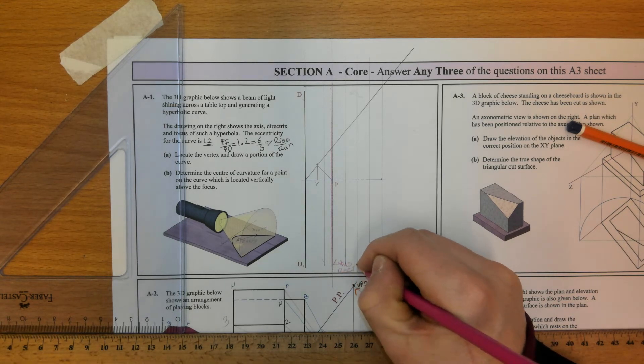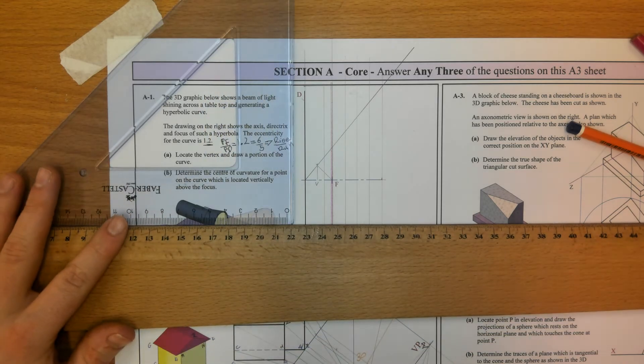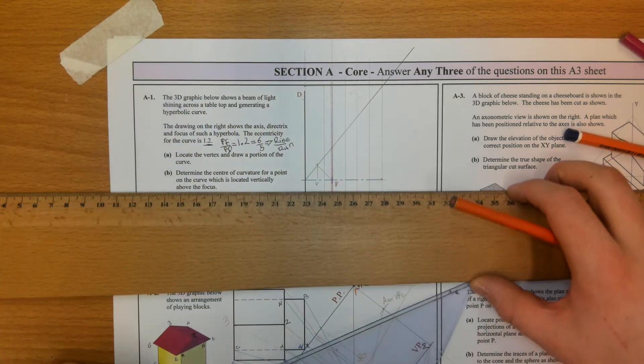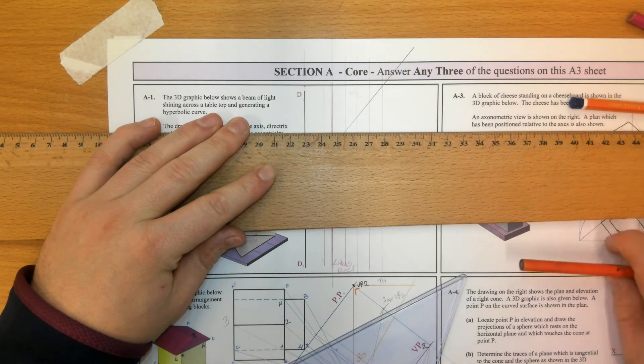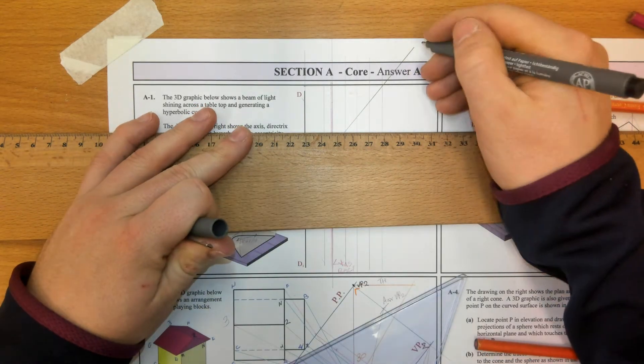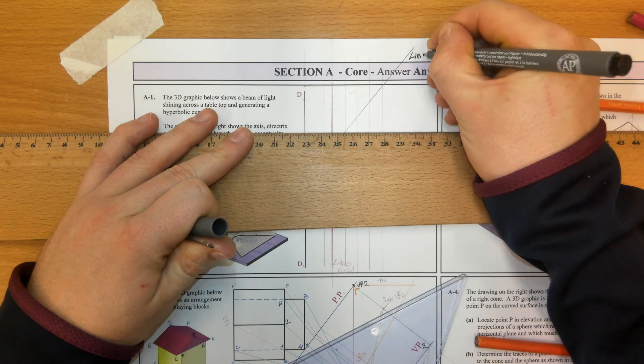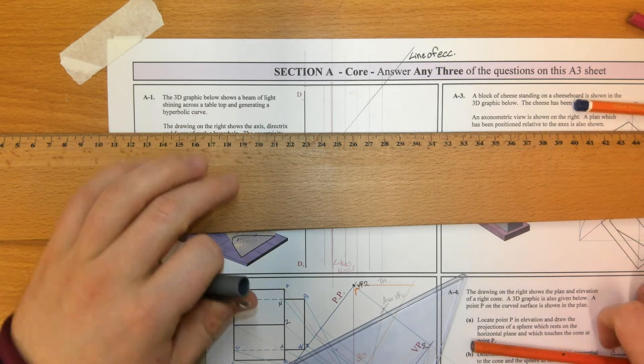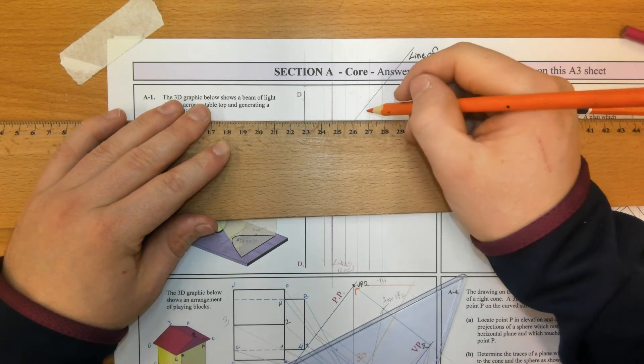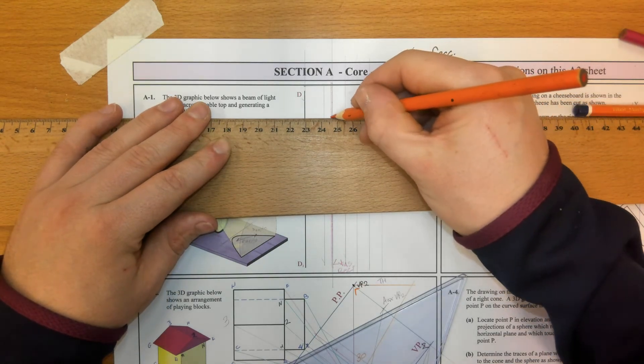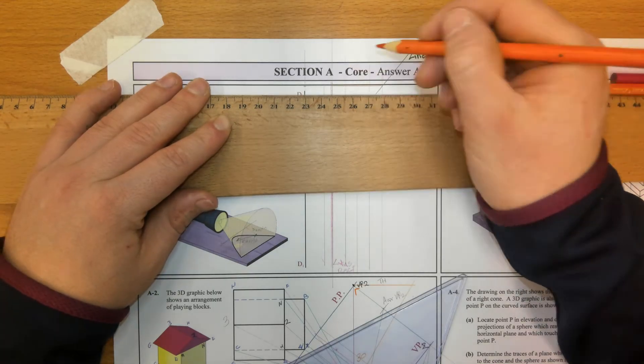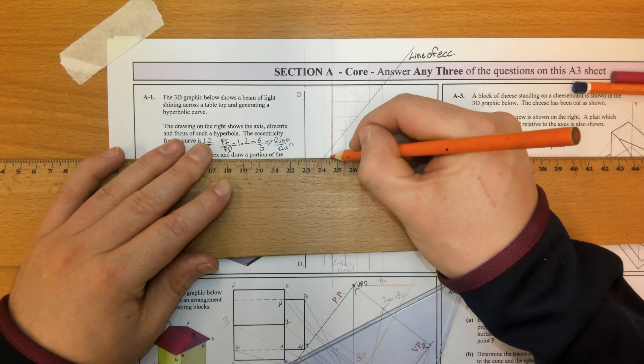Where each of the ordinates hit the line of eccentricity, we're going to go parallel to the major axis back until they hit the lattice rectum. Parallel to the major axis back until they hit the lattice rectum.